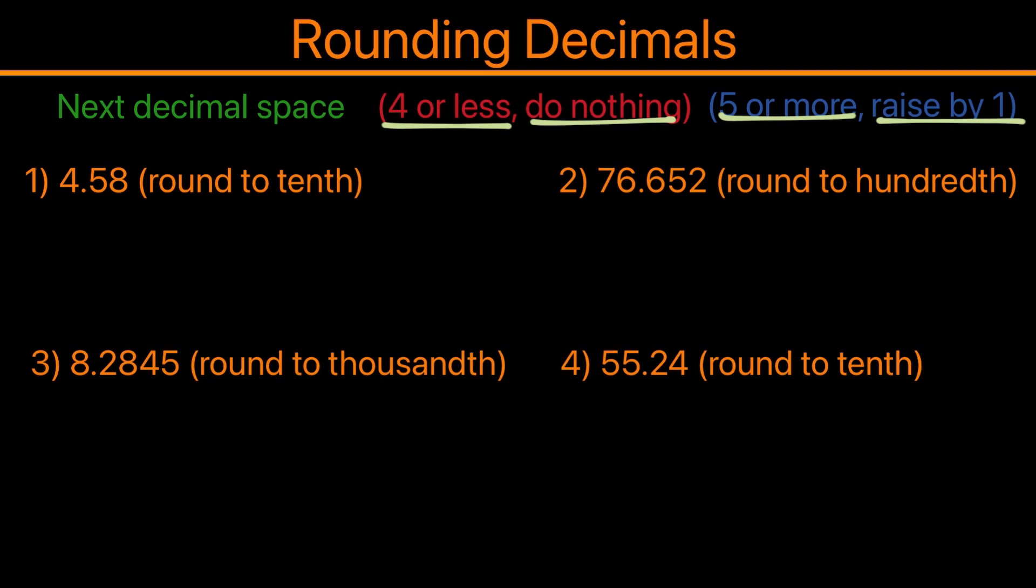So let's look at the first example here: 4.58, and we're rounding to the tenth value. So the tenth value will be here. And so what we want to do is look at the next decimal space. In this case, we have eight, and eight falls under five or more, so we need to raise it by one.